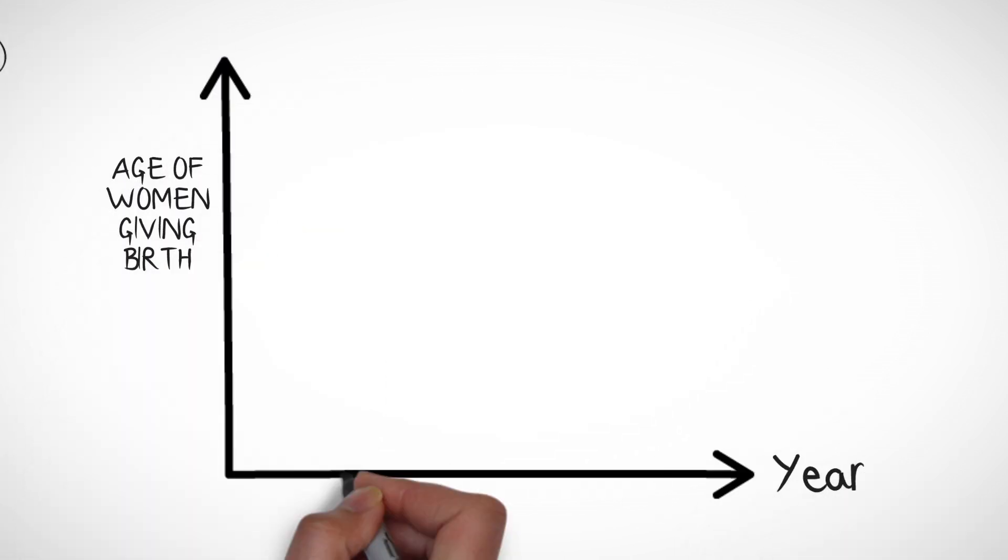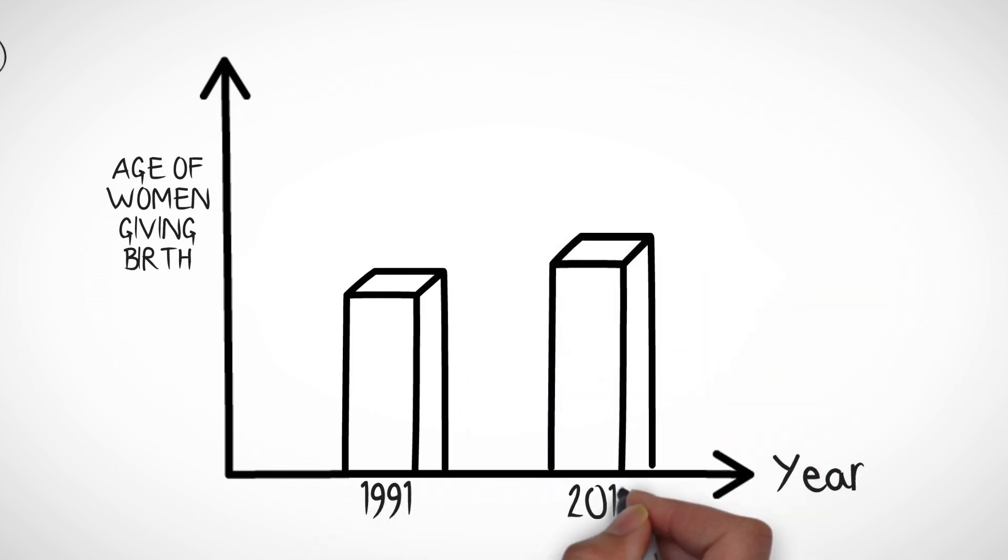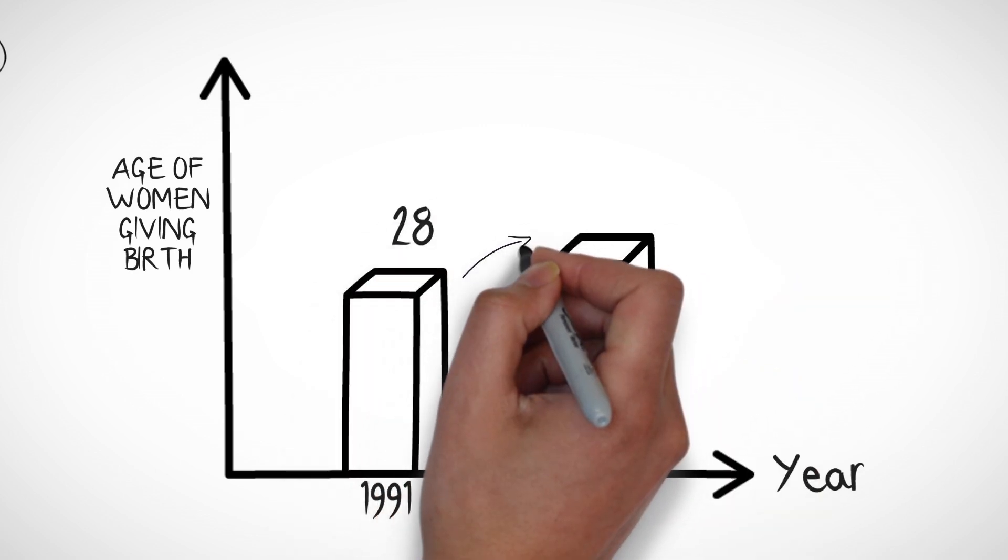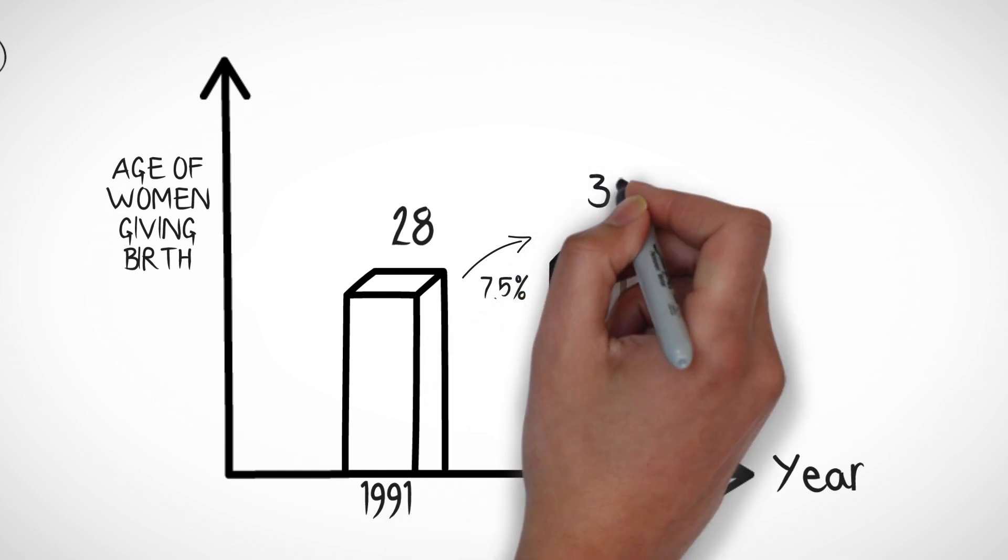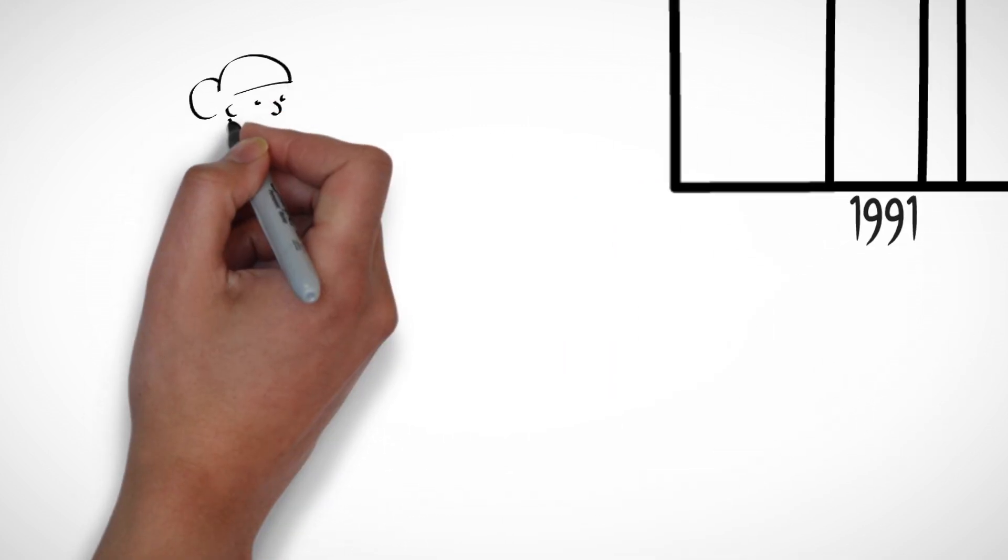Over the past 20 years, the average age of women giving birth in Australia has increased by 7.5% to 30 years of age.